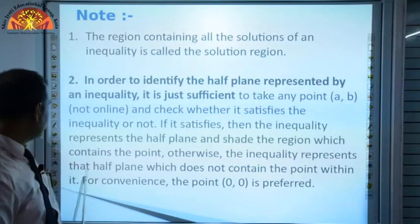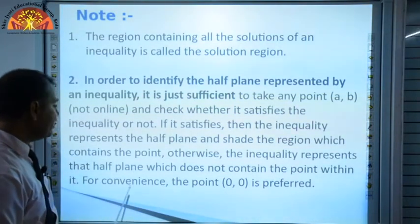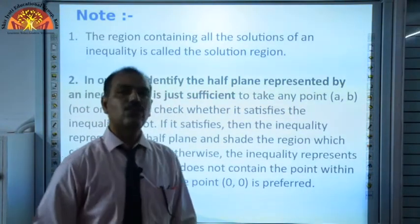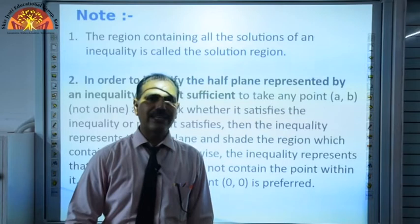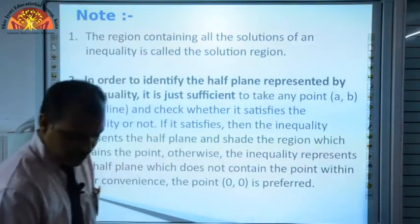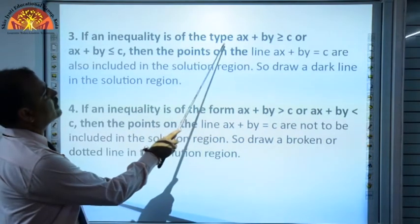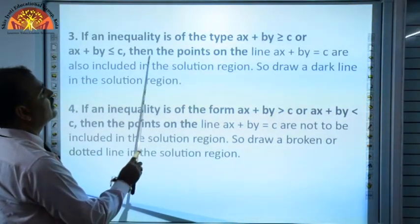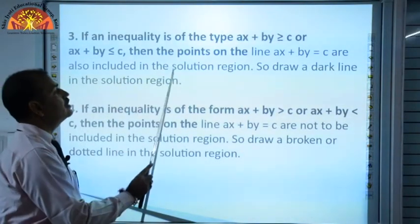Otherwise, the inequality represents the half plane which does not contain the point. For convenience, the point (0,0) is preferred. If (0,0) lies on the line, then we take two other points A and B, and check the inequality. If it satisfies, the half plane is the first or lower half; if it does not satisfy, then it is the second plane.